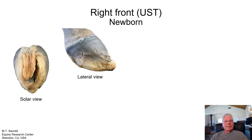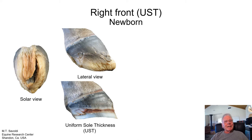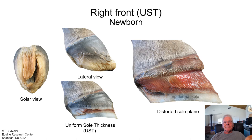Let's look at a right front foot from a newborn. To be honest, I dissected this foot a very long time ago — I believe it may have been stillborn — but it gave us an opportunity for learning. We're going to look at the sole plane in this foot. By following our dissecting protocol and removing the distal border of the hoof wall, we have exposed the sole plane, which is fairly uniform in its vertical depth. What's interesting about this foot is that it was born with a distorted sole plane — you can see that the epidermal sole has a bend in it.